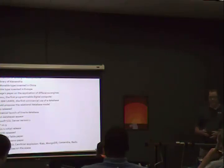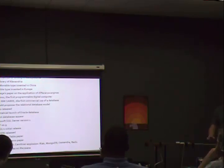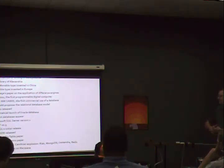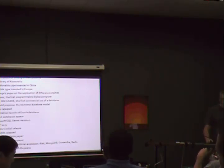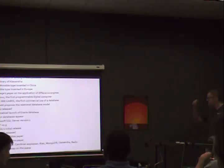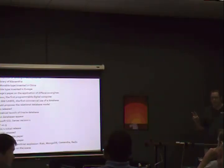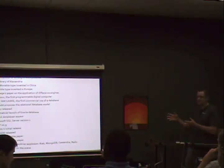It wasn't until 1970 that E.F. Codd proposed the relational database model and later came up with SQL. In 1979, Oracle database was released. Around 1990, after SQL Server came to market, relational databases became the norm. So we had a period of about 20 to 30 years where we sort of defaulted to sticking things in rows and tables.